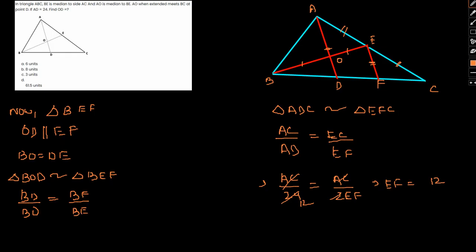So here we can write BD. Therefore we can write 2BD by BE equal to BF by BE. Therefore twice BD equal to BF. Here we can write BD by BF equal to 1 by 2.